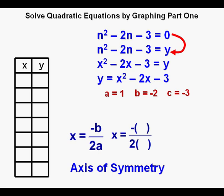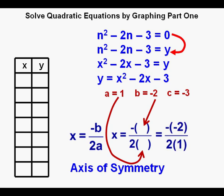Now Joe rewrites the axis of symmetry formula with the parentheses into which the constants a and b can be inserted. The b goes into the numerator, and the a into the denominator where the parentheses are. And here the -2 is inserted into the numerator, and 1 is inserted into the denominator. And all simplified, that equals 1.